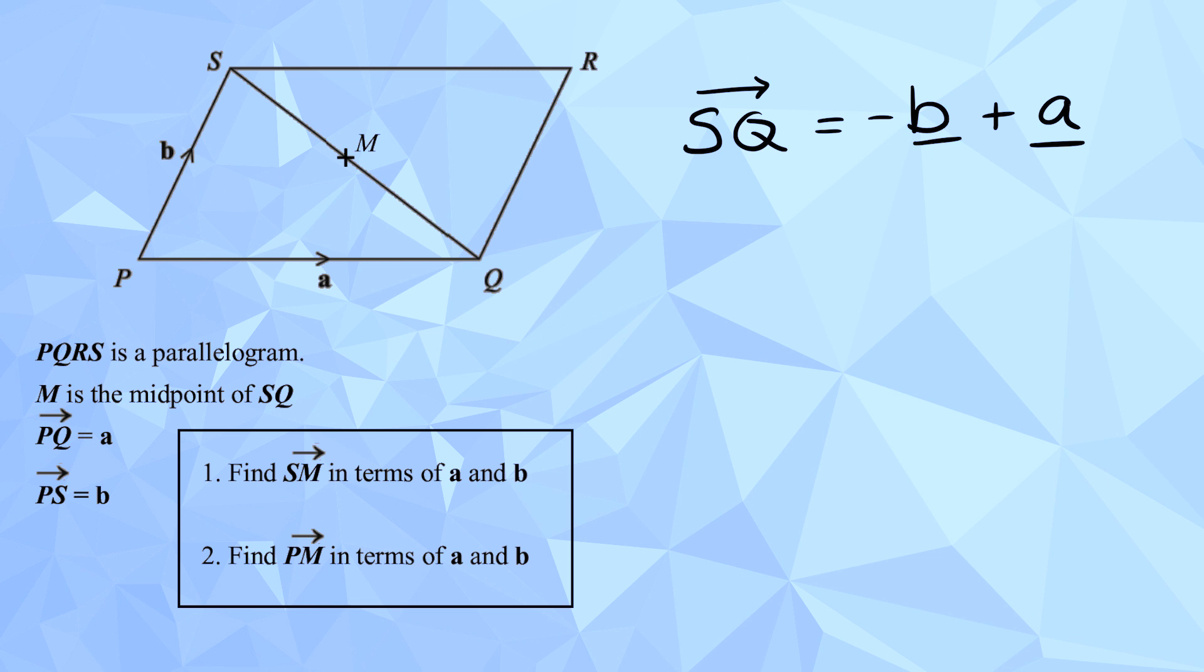Right. Because M is halfway through, then it's half of that, so it would be negative half b plus half a. That's perfect. Yeah. So, SM is exactly half of SQ, so it's just going to be half of what we've got for that bit. So, yeah, you're absolutely right. Negative half b, add half a. Brilliant. Good man. Good man. Right.